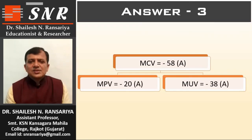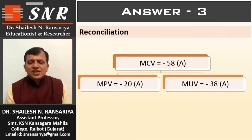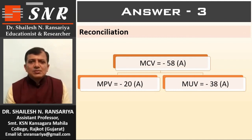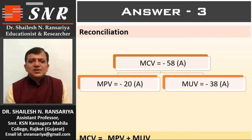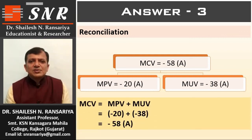See the reconciliation. MCV minus 58; MPV minus 20; and MUV minus 38. So, MPV 20 plus MUV 38 equals minus 58.